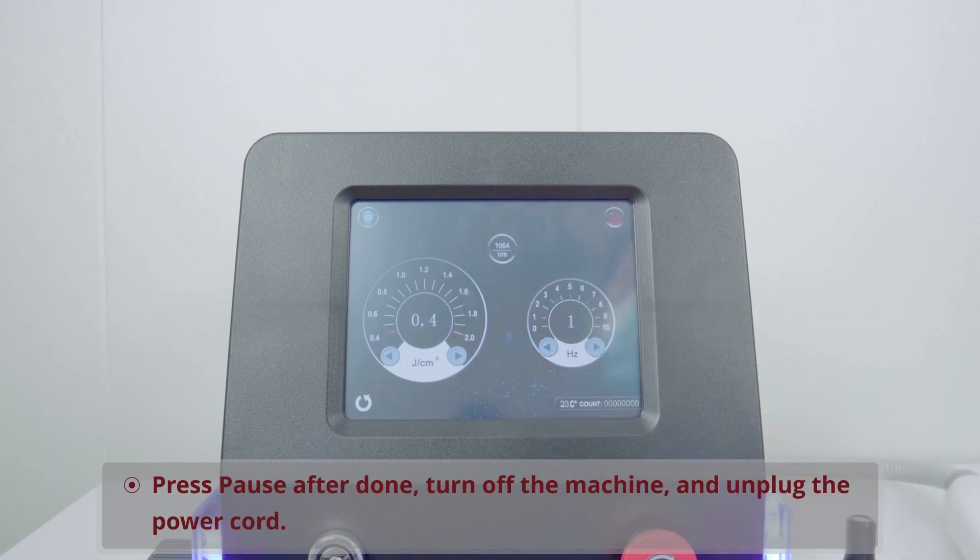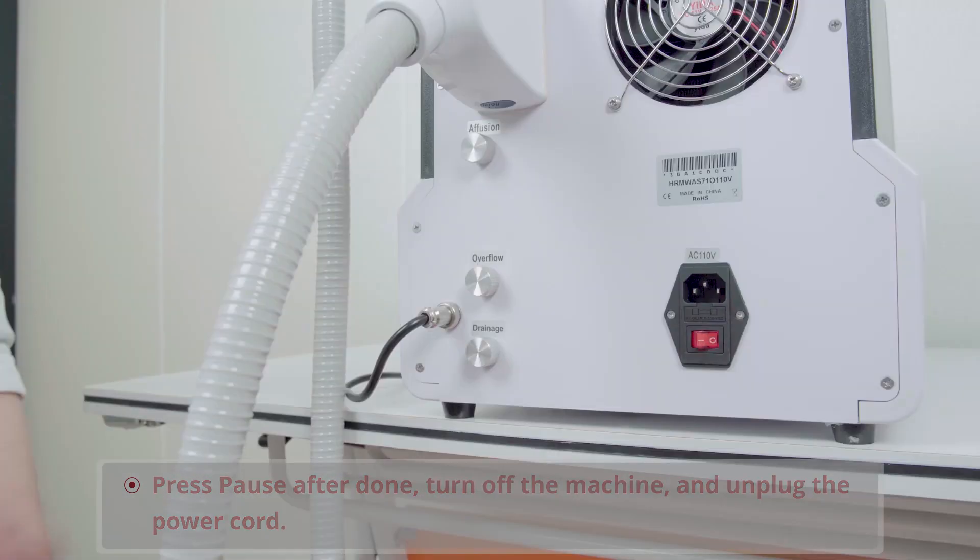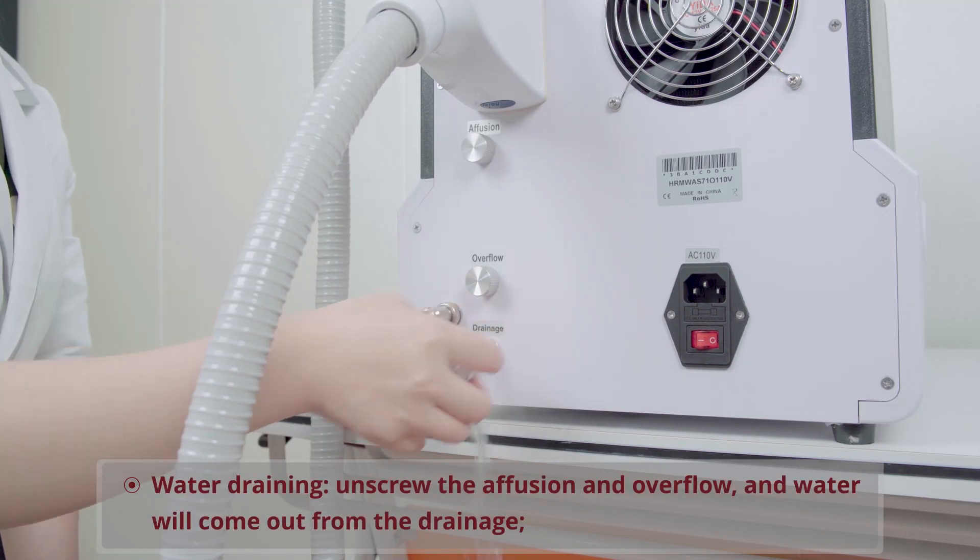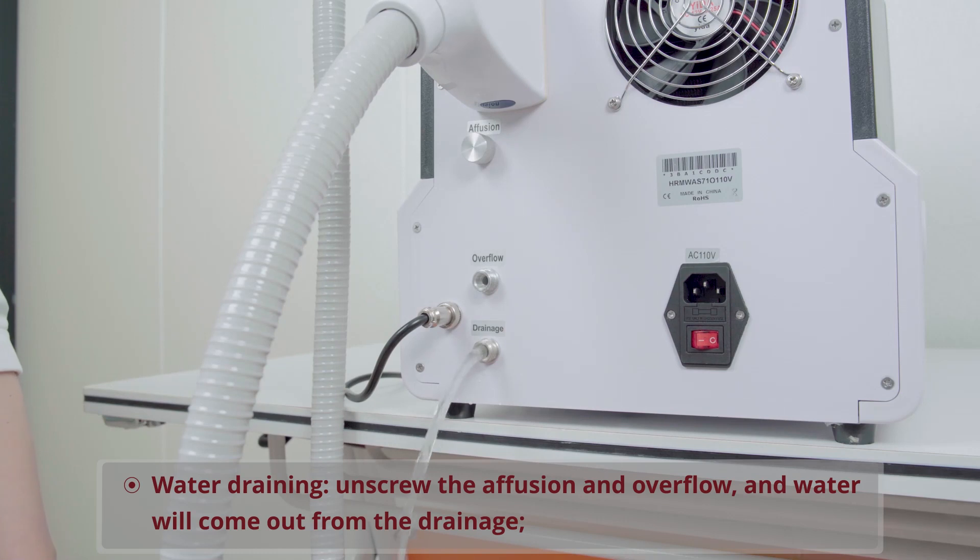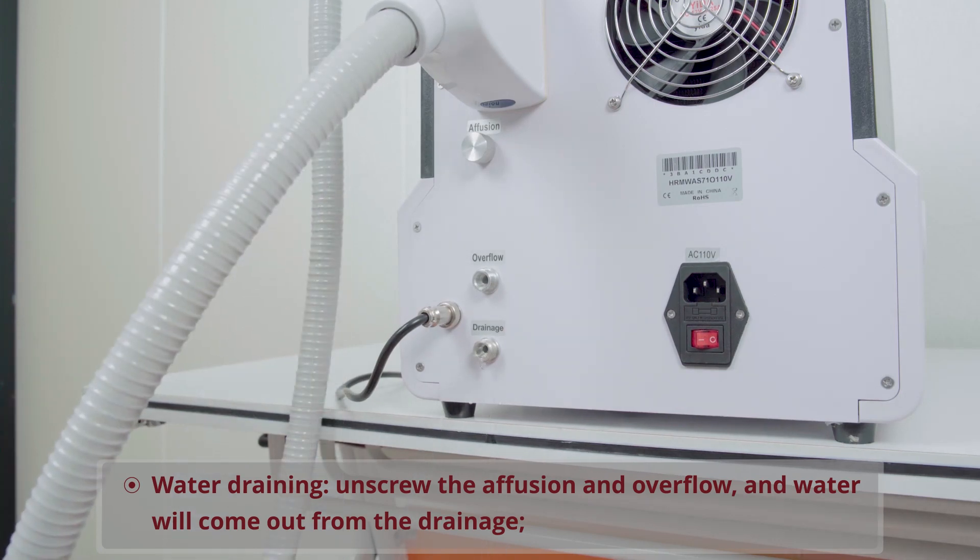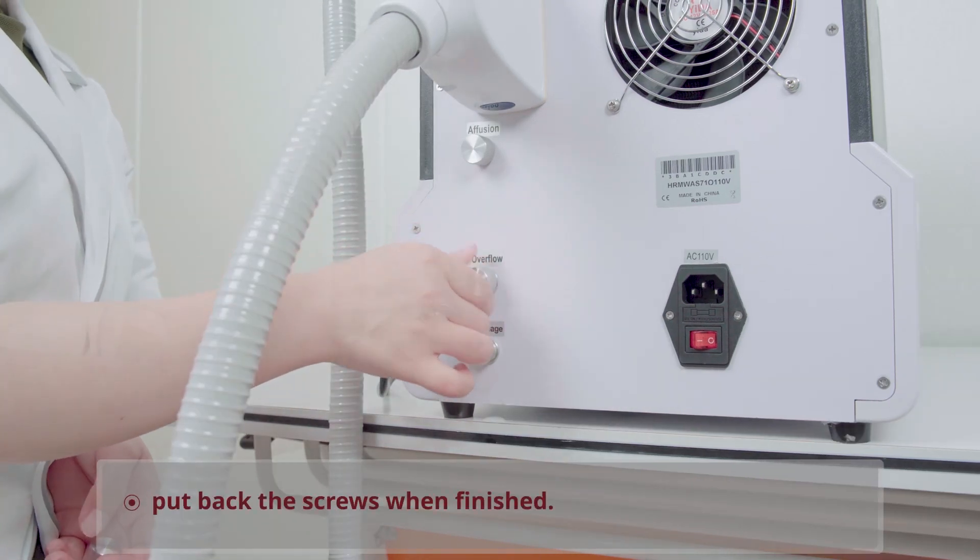Press pause after done. Turn off the machine and unplug the power cord. Water draining: unscrew the effusion and overflow and water will come out from the drainage. Put back the screws when finished.